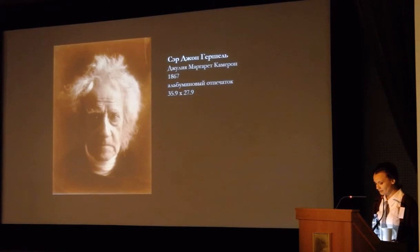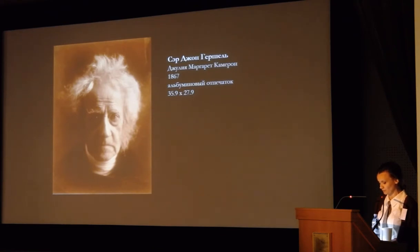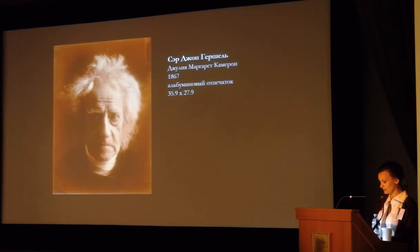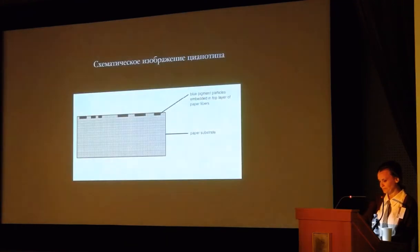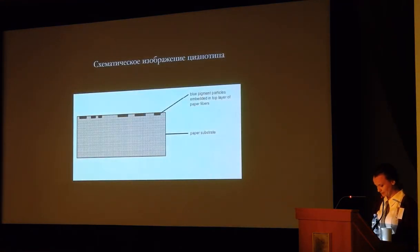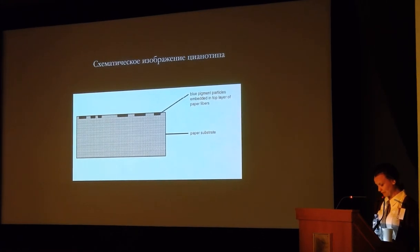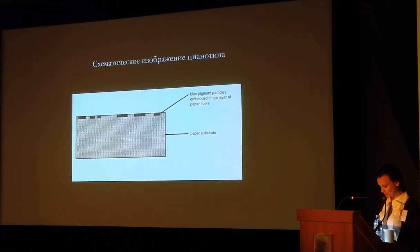Sir John Herschel was the first scientist to discover that iron salts were light-sensitive, and he informed London's Royal Scientific Society about that. He covered paper with iron or ferric chlorides or ammonium ferric citrates. After exposing to light, he obtained a contrast image. The interaction between these salts led to the so-called Berlin or Prussian blue, which was a special ferric compound that produced a cold blue color.